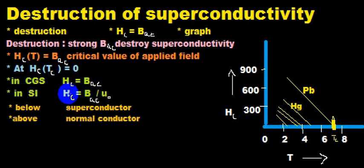In SI units, HC equals BAC by mu0. Here the question is, what is mu0? It is the amount of resistance encountered when forming a magnetic field in vacuum, and its value is 4π multiplied by 10 to the minus 7 henry per meter.